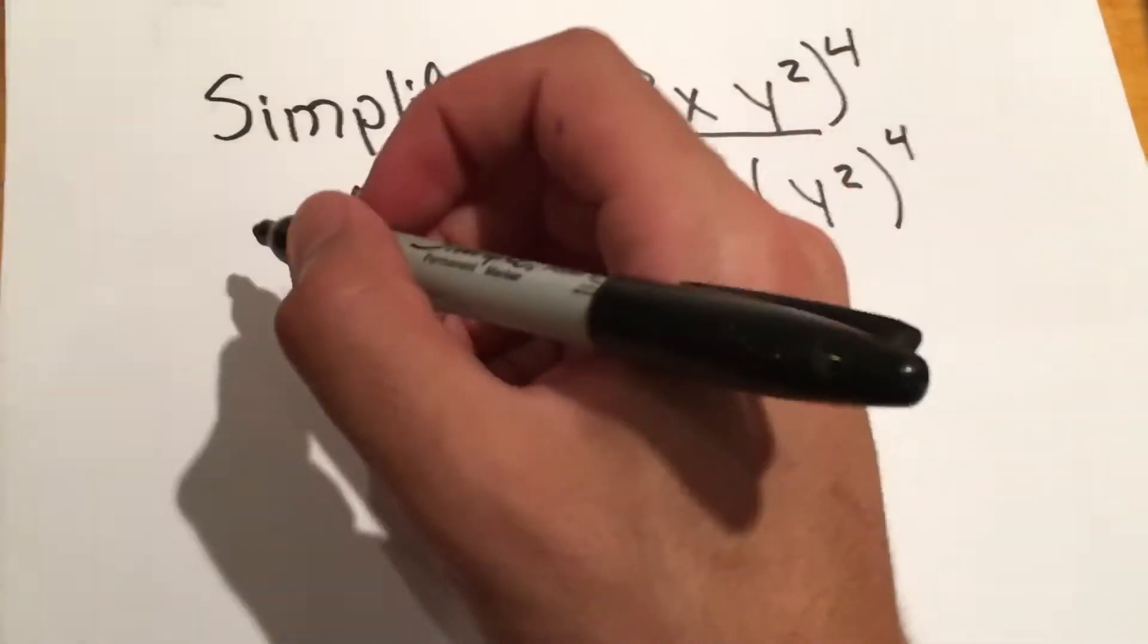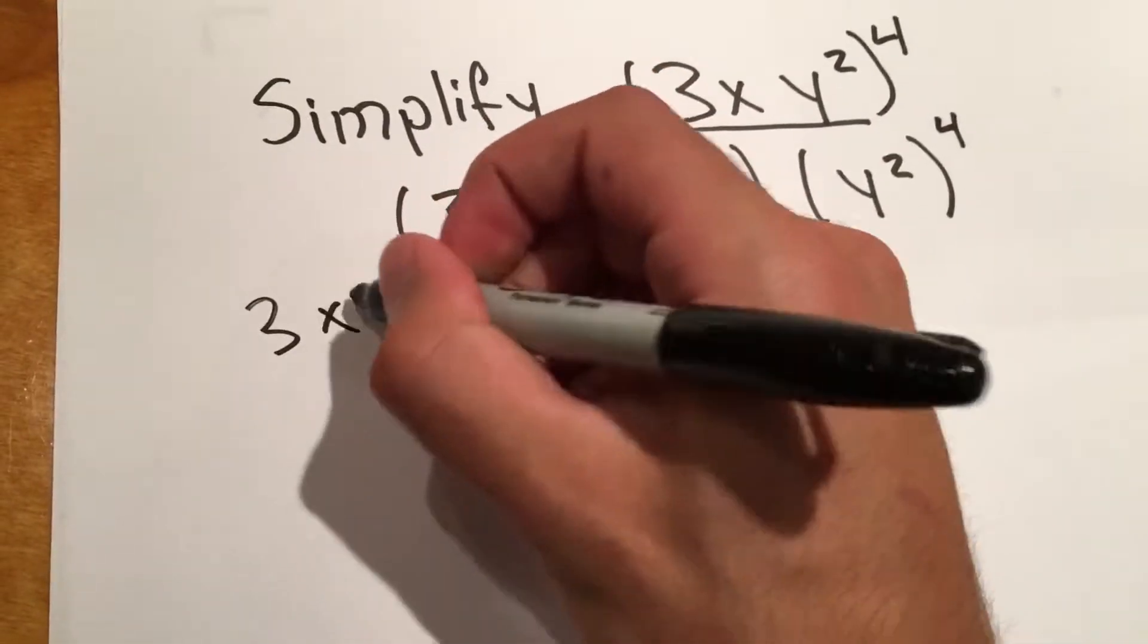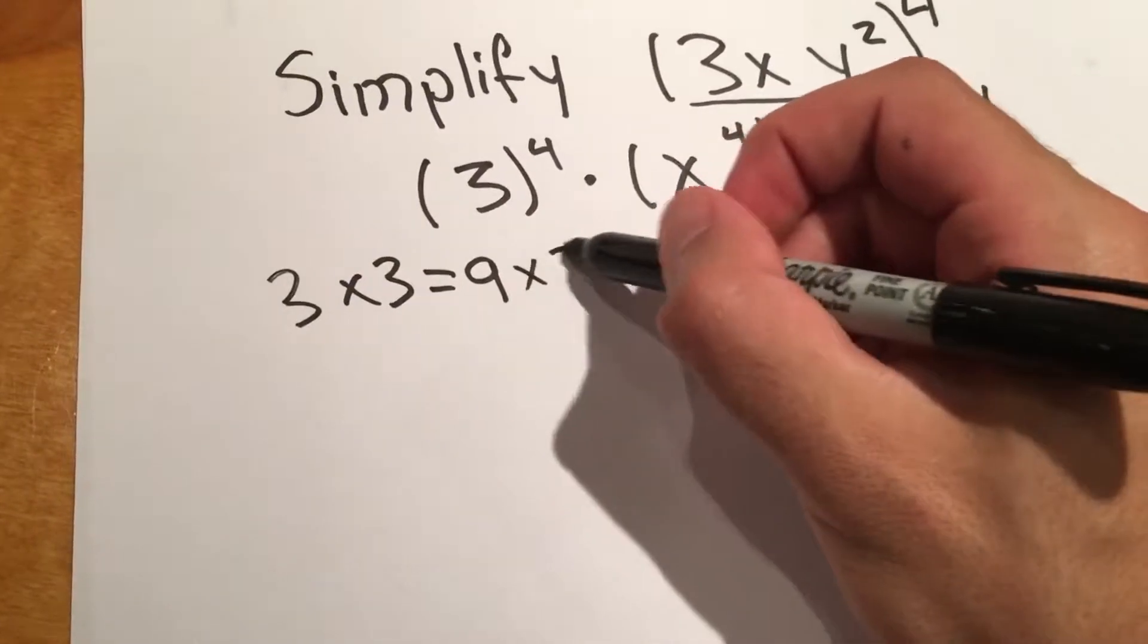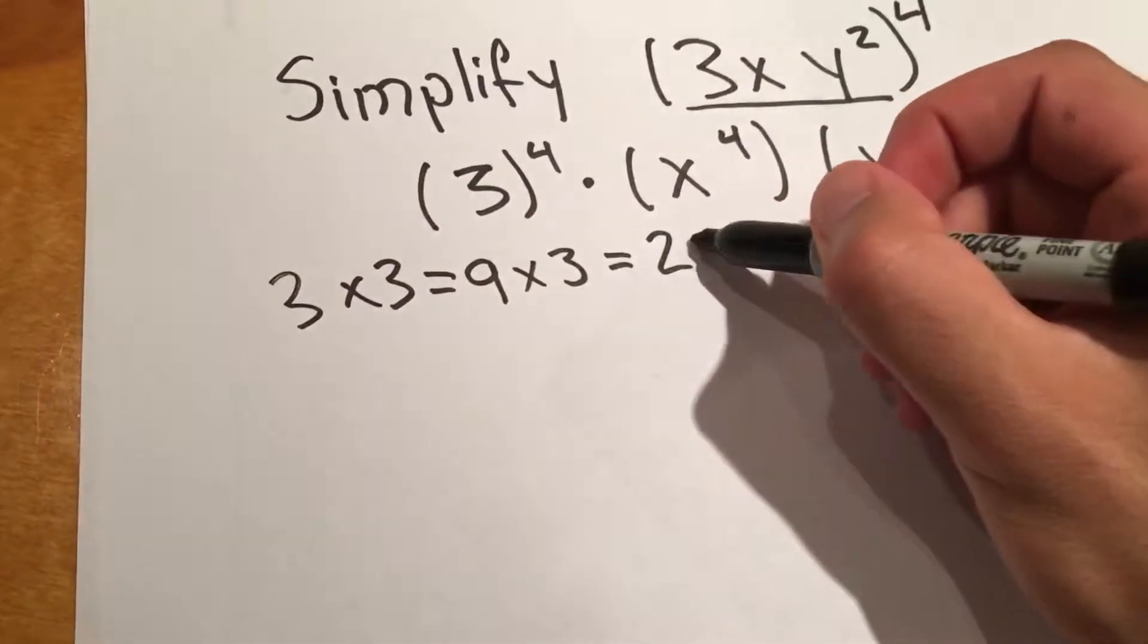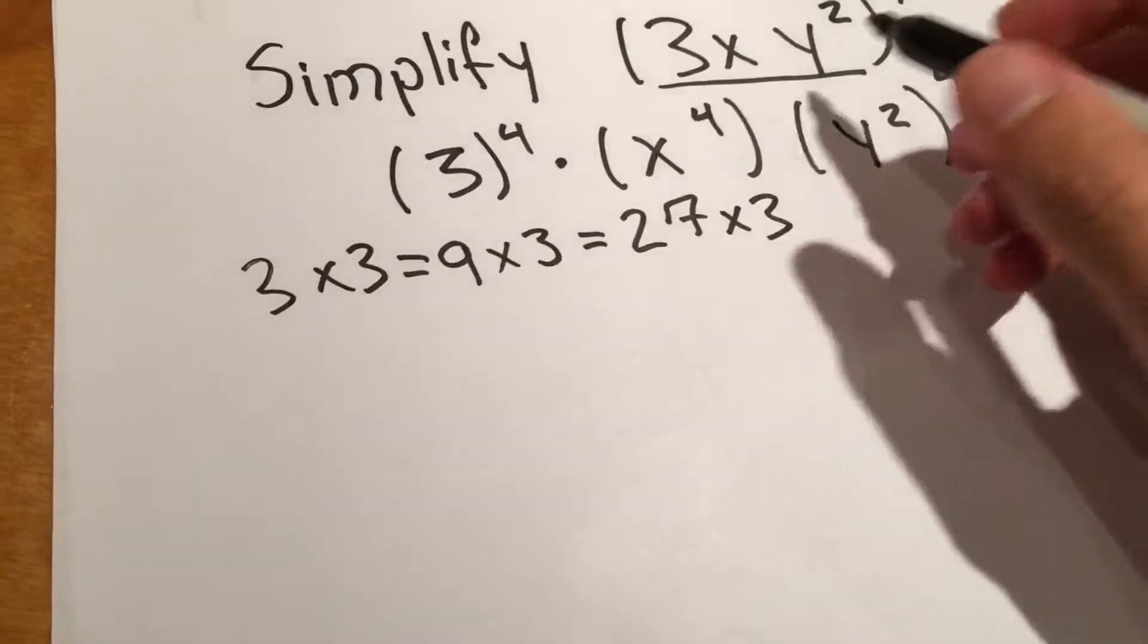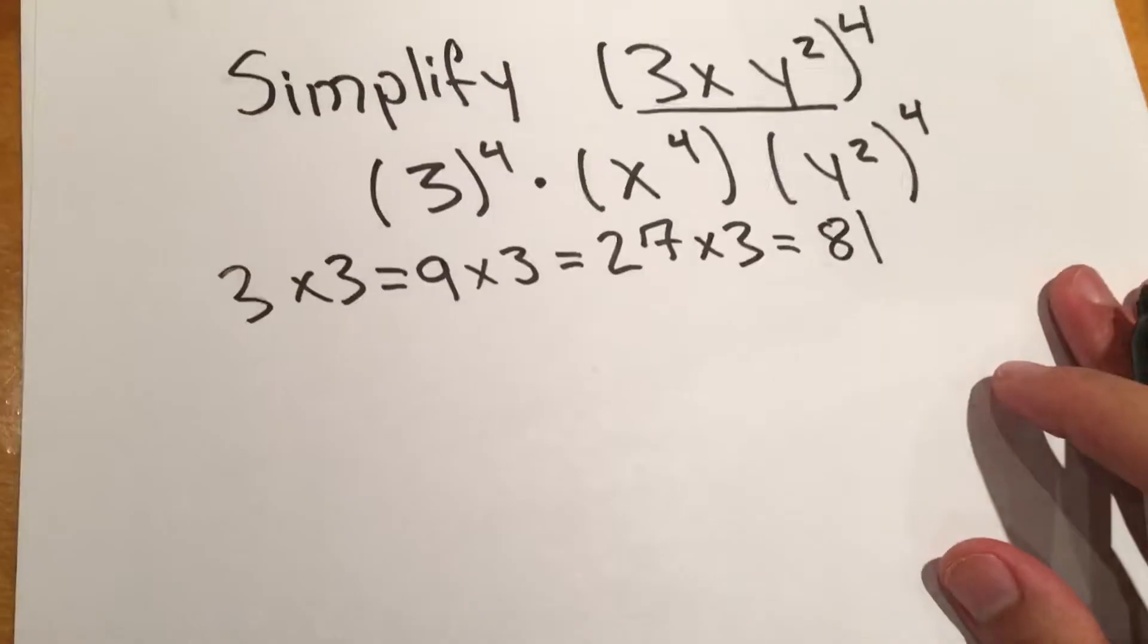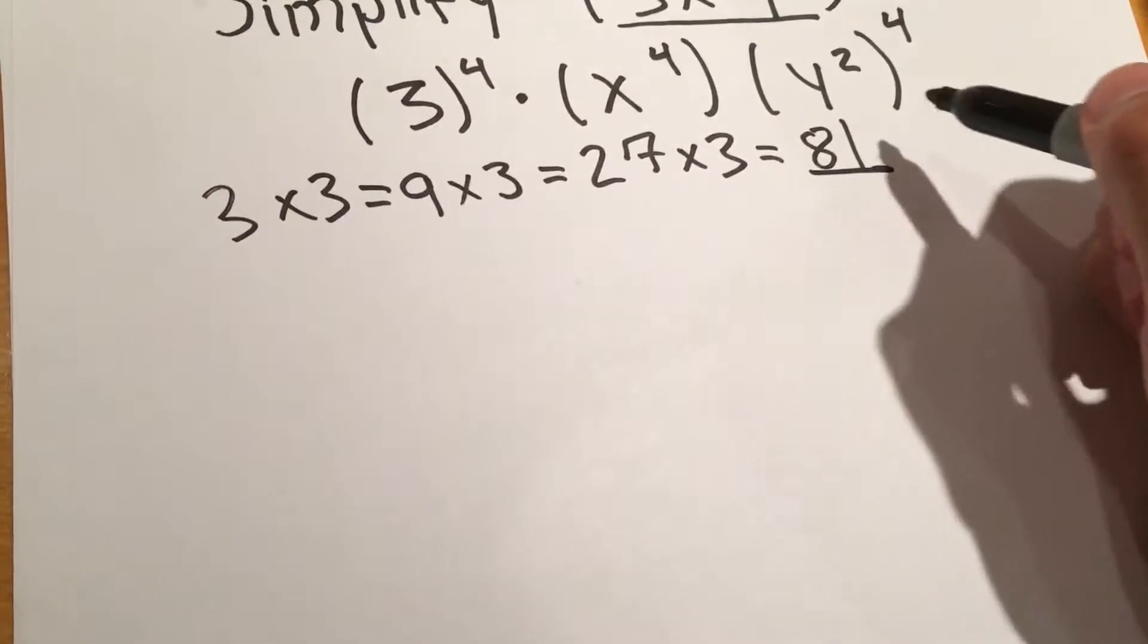So 3 to the 4th is just 3 times 3 which is 9, times 3 again which equals 27, times 3 again which I know is 81. You may need to multiply that out. So that's going to be our first one.